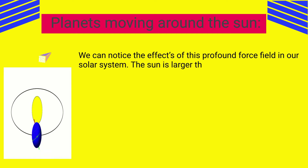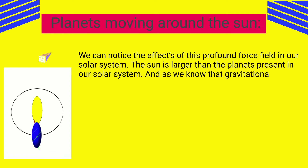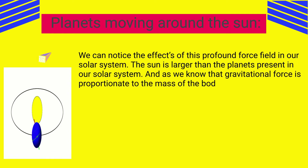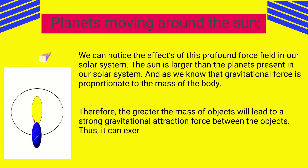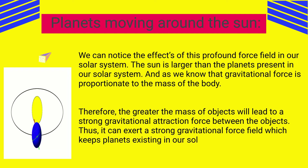The sun is larger than the planets in our solar system, and gravitational force is proportionate to the mass of the body. Therefore, the greater the mass of an object, the stronger the gravitational attraction force between objects. This allows the sun to exert a strong gravitational force field which keeps the planets in our solar system in orbit.